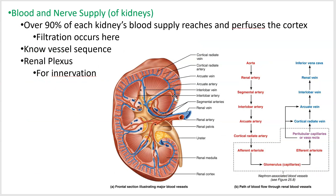The blood vessels that perfuse the kidney — over 90% of the blood that goes into a kidney ends up going into capillary beds up in the cortex. So 90% of the capillary beds of the kidney are located out in that cortical region, and that's where you're going to have the first step of urine production, called filtration, take place.